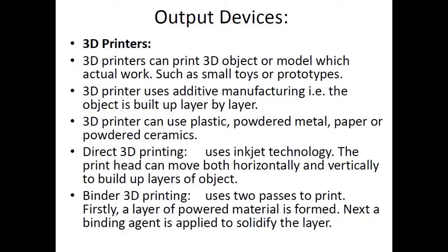There are two types of 3D printers: one follows the direct 3D printing method and the other follows the binder 3D printing method. In direct 3D printing, it works similarly to inkjet technology — the print head can move both horizontally and vertically. There are basically two print heads moving along the X, Y, and Z axes to print layer by layer. Whatever material is used, whether plastic or powdered metal, it is melted and sprayed through the nozzles layer by layer. As it cools, the different layers stick together and ultimately an object is formed.